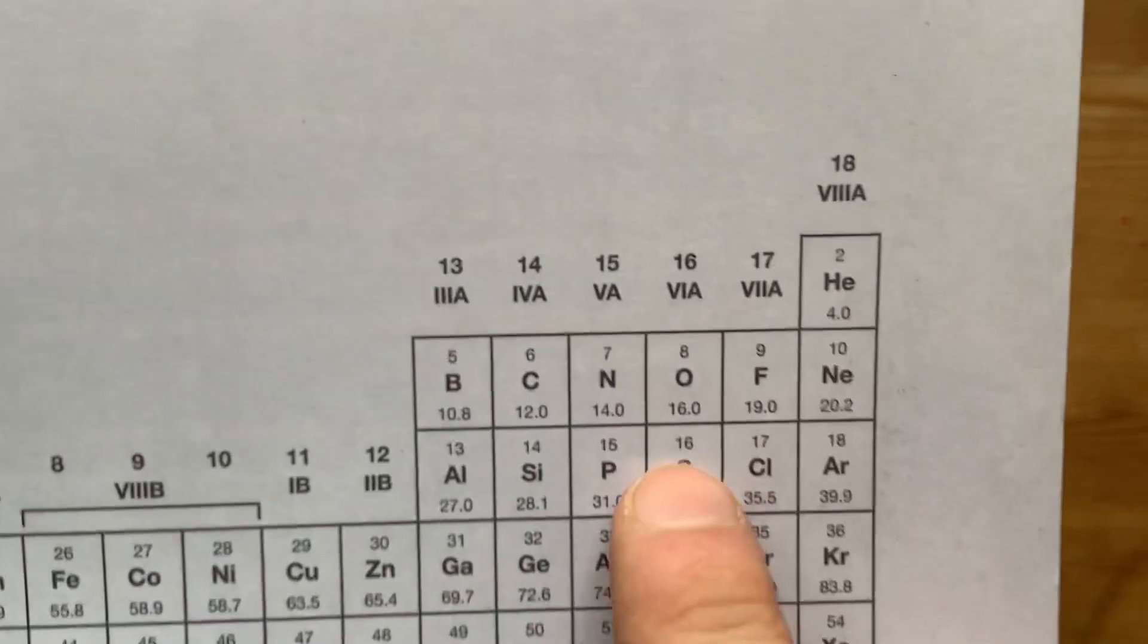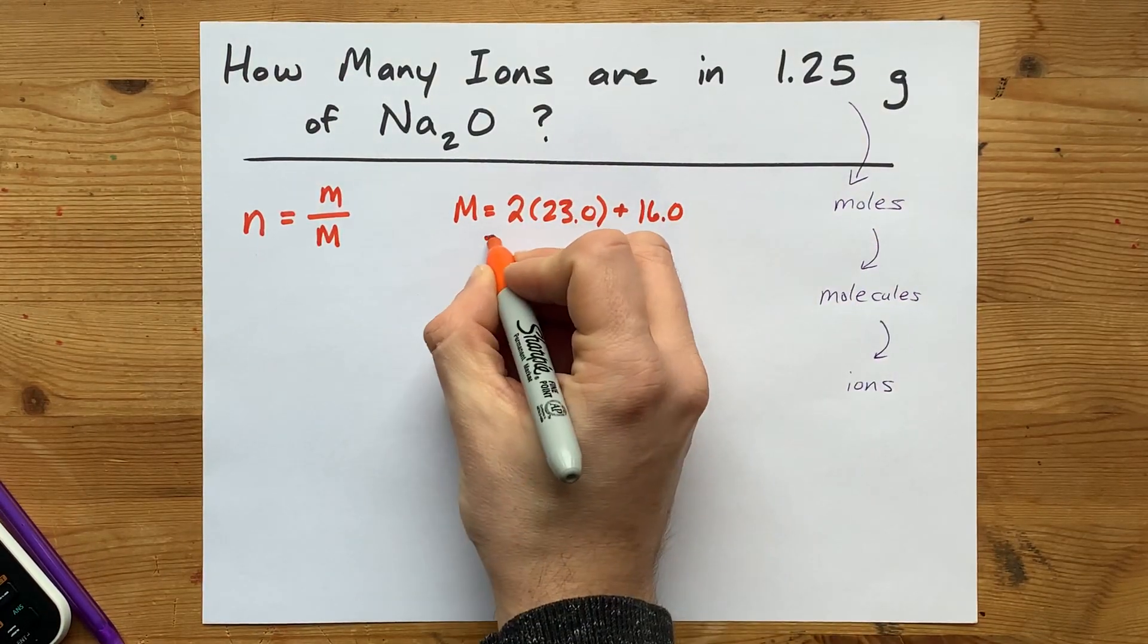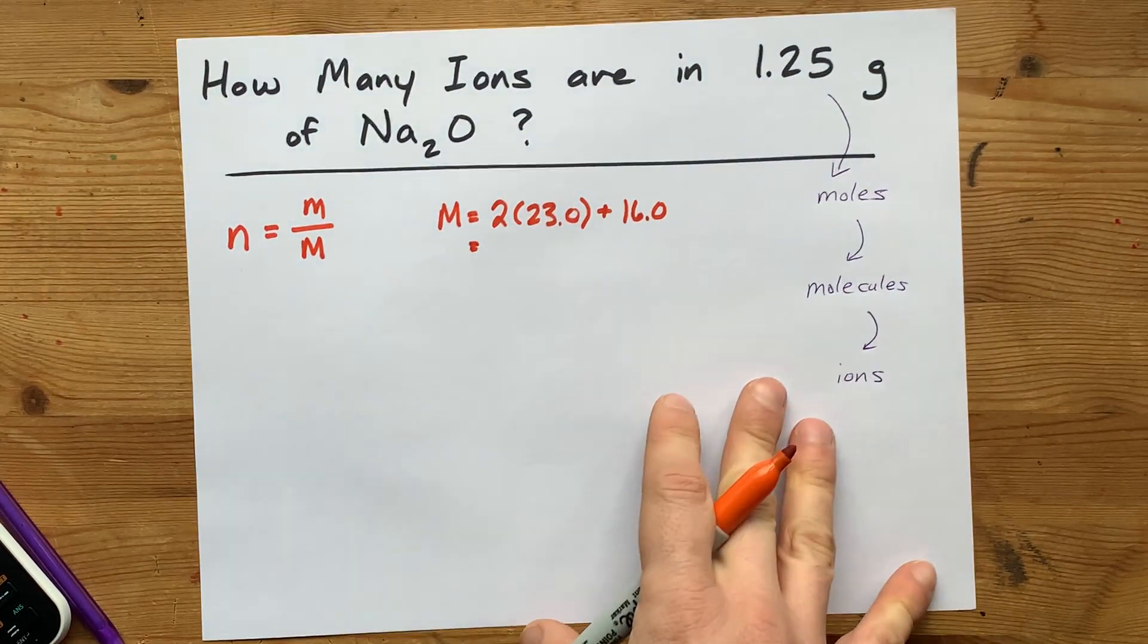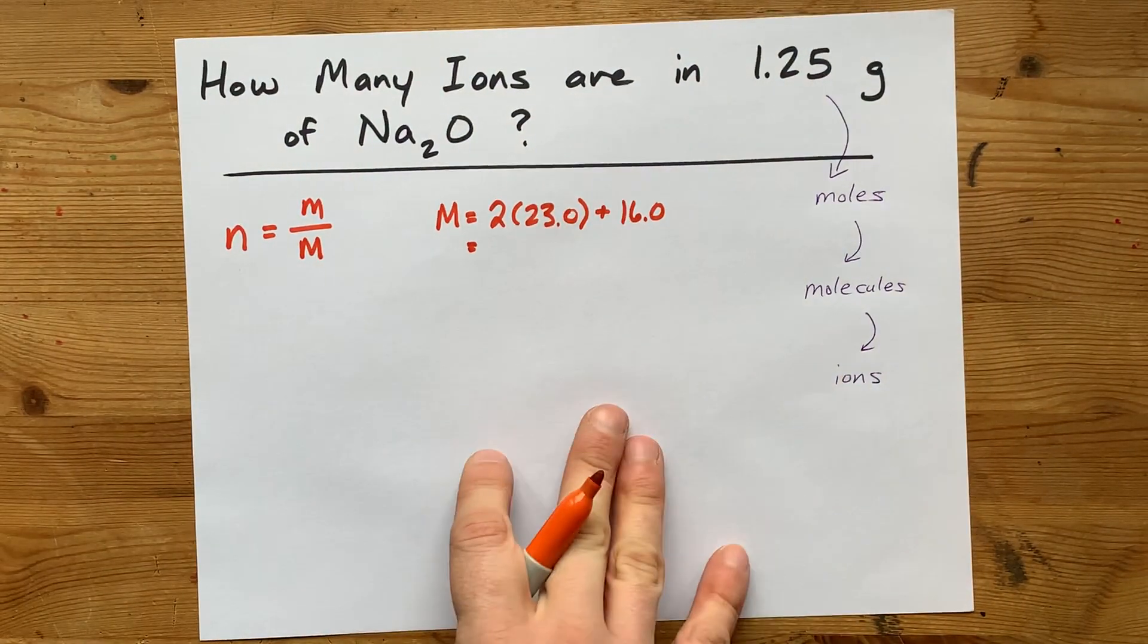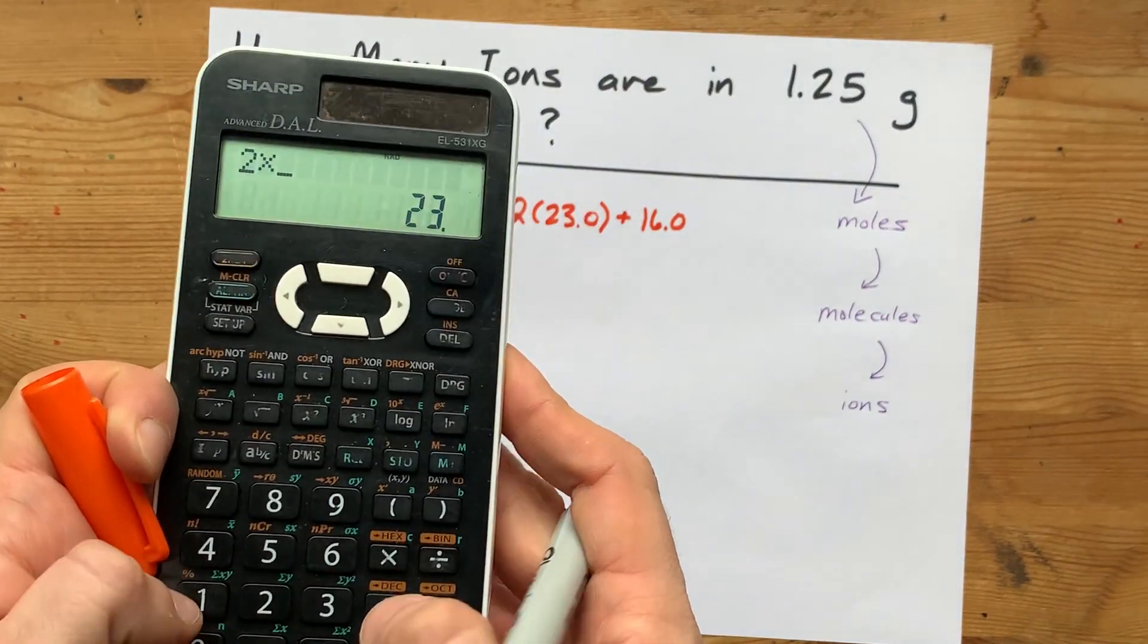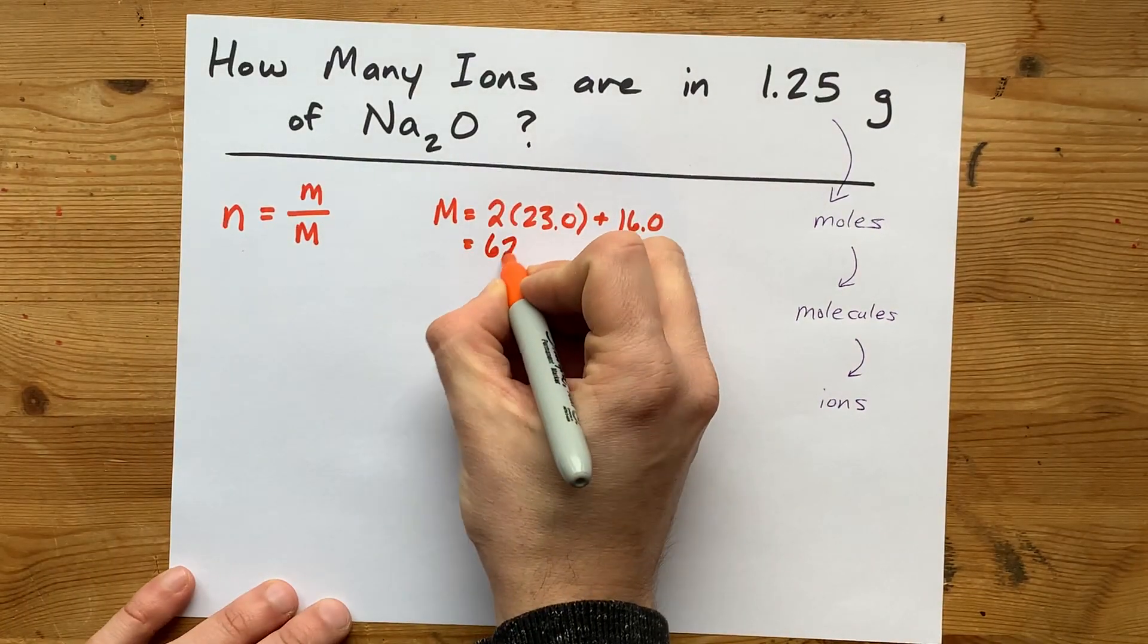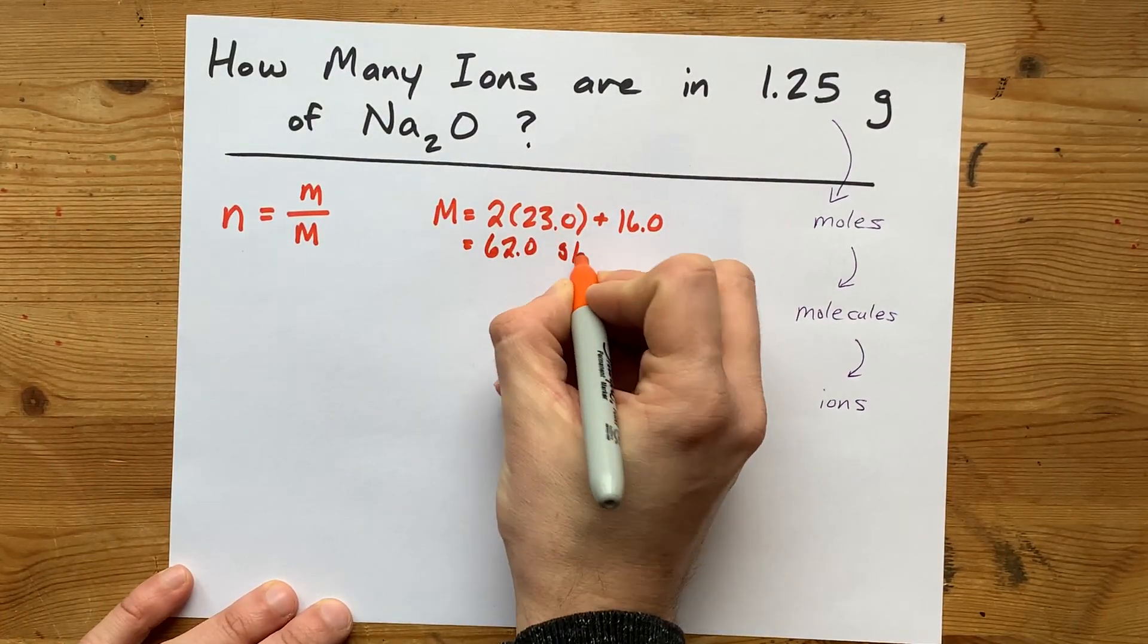along with an O. Each O is 16.0. Now, you might have more decimal places on your periodic table. You should obviously use the periodic table your teacher wants you to use. 2 times 23 plus 16 gives me a molar mass of about 62 grams per mole.